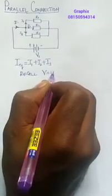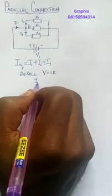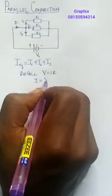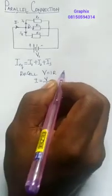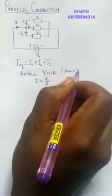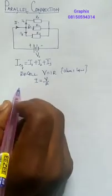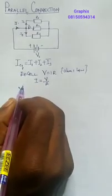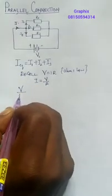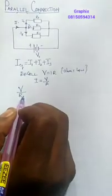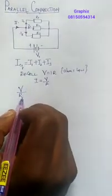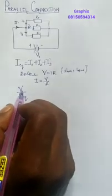We recall that according to Ohm's Law, V is equal to IR. And if I make I the subject of the formula, my I will be equal to V over R. This is Ohm's Law. So since I have this, anywhere I see I, I replace it with V over R, so this will give me V over R.